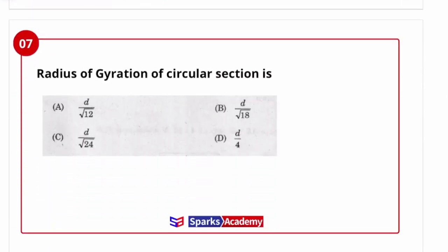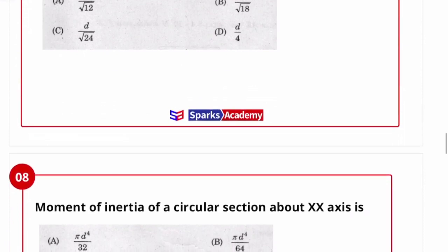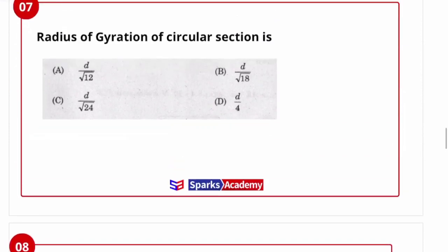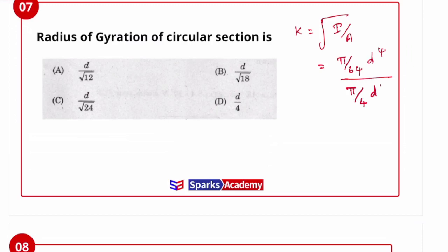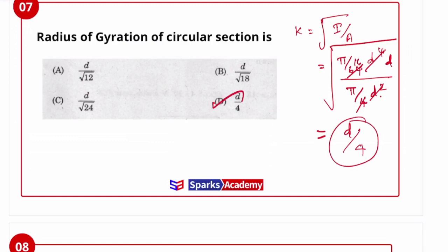Next question: the radius of gyration of a circular section. Radius of gyration k equals the square root of I/A. For a circle: I = πd⁴/64 and area = πd²/4. Solving gives k = d/4. The answer for a circular section's radius of gyration is d/4.